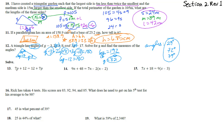Number 13: solve 7p plus 12 equals 12 plus 7p. Subtracting 7p from both sides gives 12 equals 12, which is always true regardless of p. So p is all real numbers — this is an infinite solutions case.